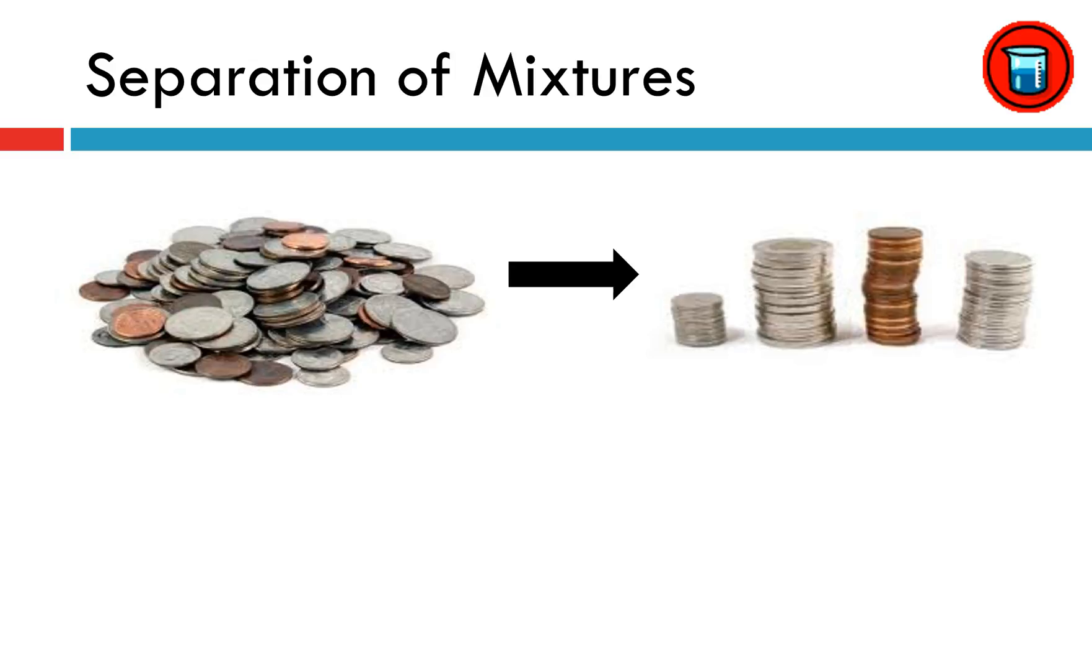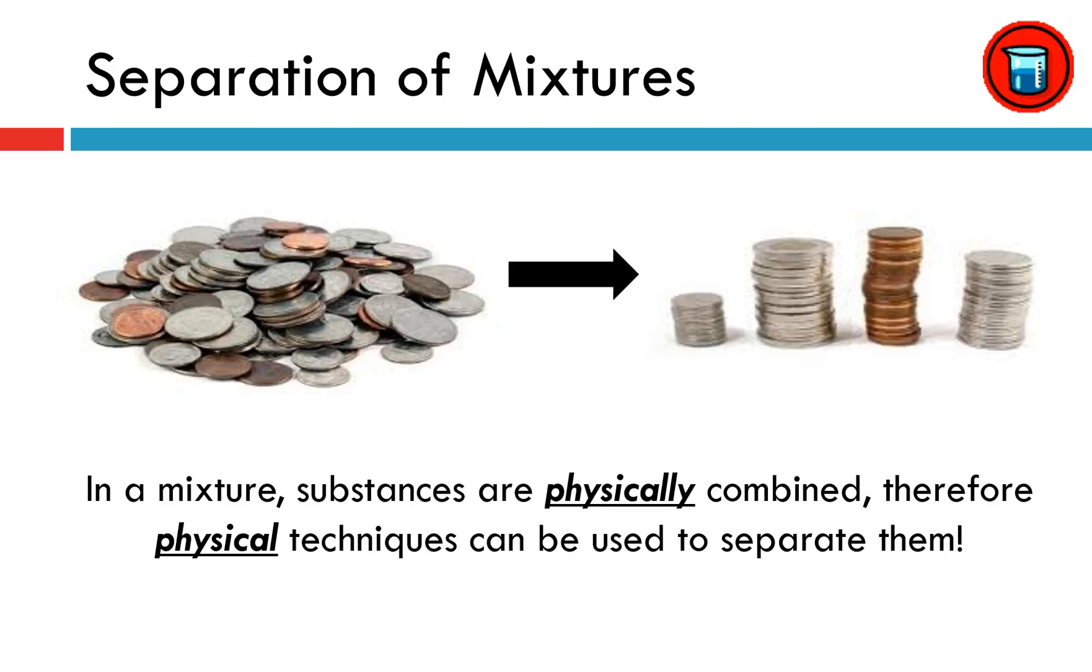You could make a freshman go through and put them in piles for you. You might have something like a coin sorter at home that'll do this for you automatically. Maybe you can separate it based on the size of the coin or the mass of the coin. Regardless of how you choose to separate this mixture, it's key to take note of the fact that mixtures are physically combined, therefore we use physical techniques to separate them.